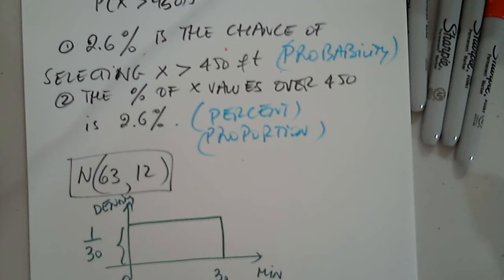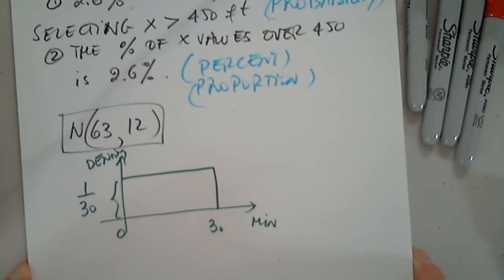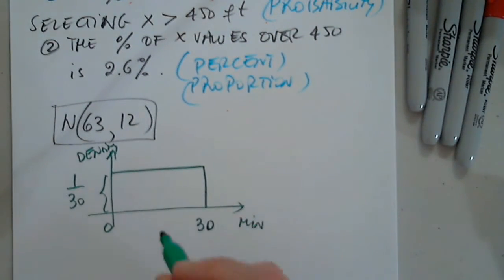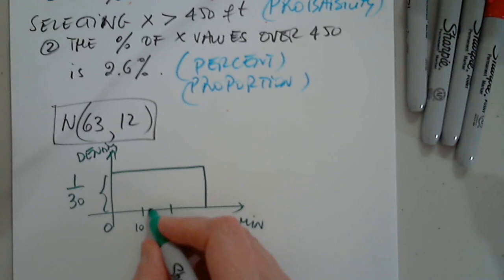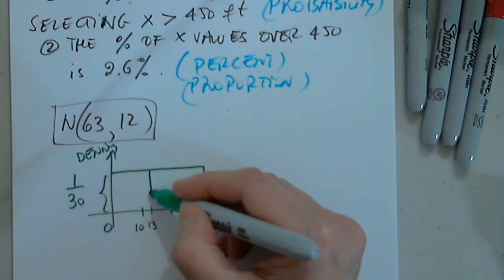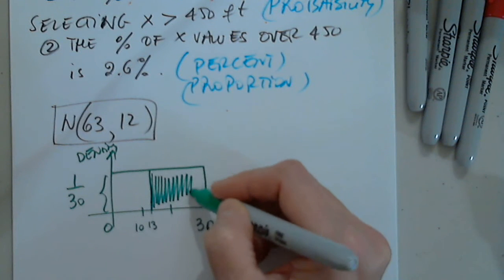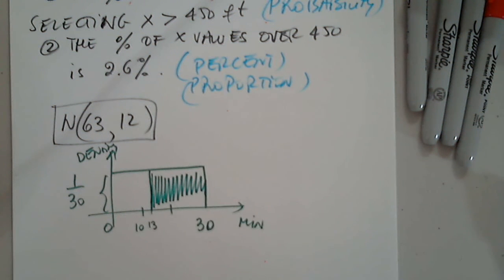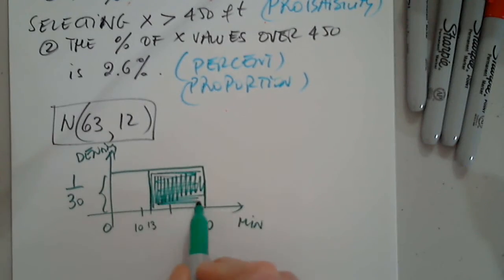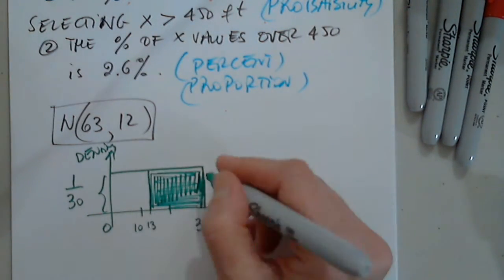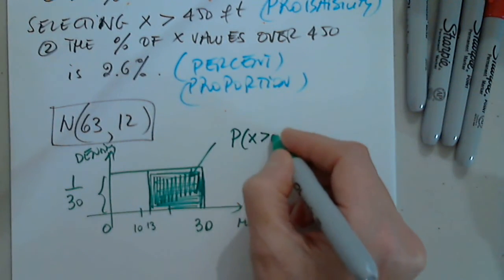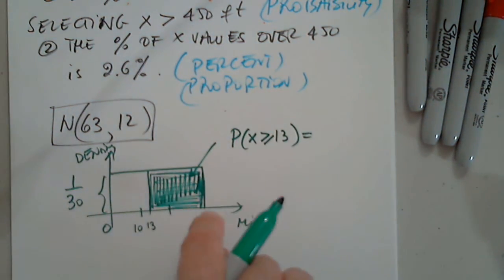So the probability that the friend is at least 13 minutes late. Let's talk about this first. So, what does 13? So this is between zero and 30. And let's say I have 10, 10 here. So this is 10 and we're looking at 13. At least 13 minutes late is all this area. So it's all this area. So the probability for x at least 13. Remember, for continuous random variables.